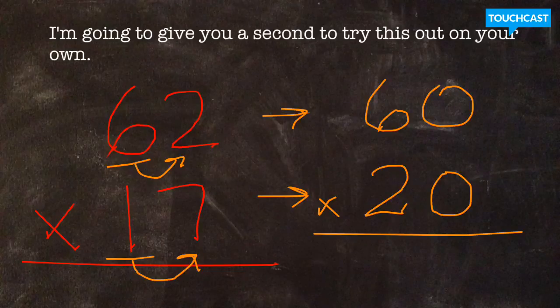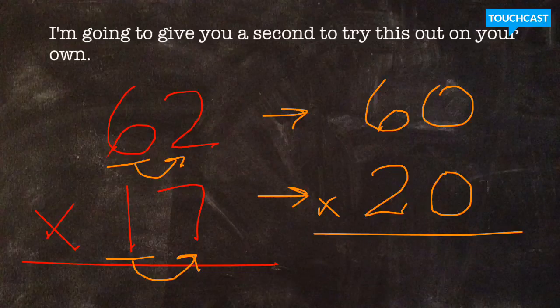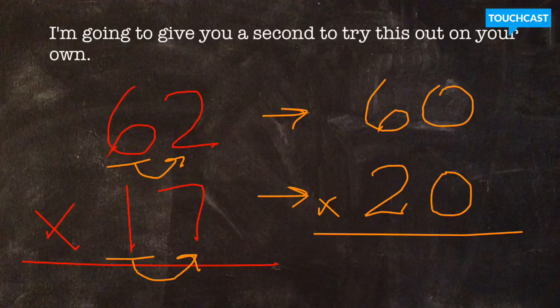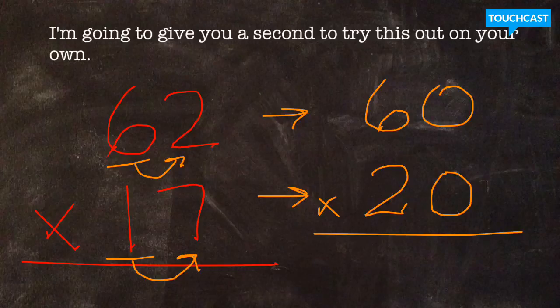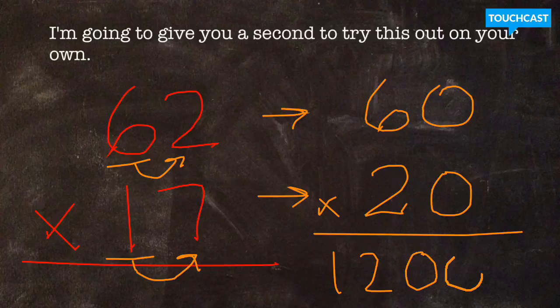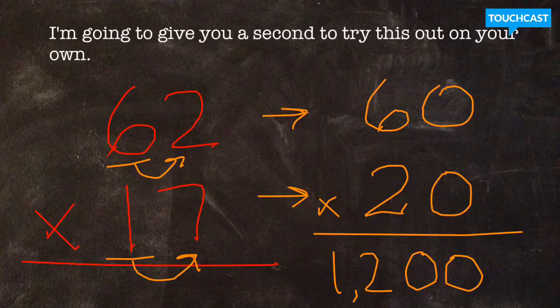Hopefully you took a minute to pause the video and test out the strategy of rounding both factors in your math journal. So if you rounded 62 properly, it would round to 60. If you rounded 17 properly, it would round up to 20. Now, I can use my zero trick and my base factors to say 6 times 2 is 12. Two zeros in my original equation, which means two zeros in my final answer. So the estimated product of 60 times 20 is 1,200.